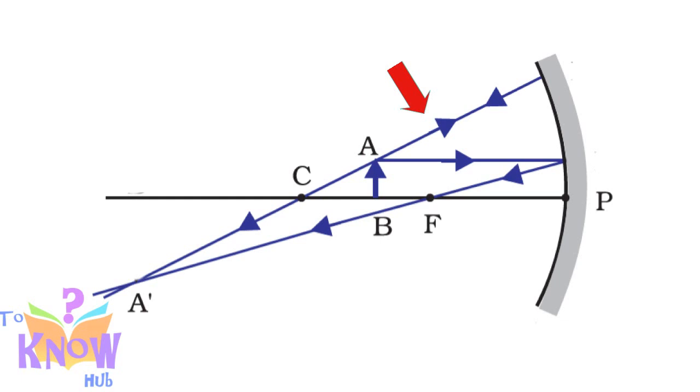So these elements are very important to guess the path of reflected ray. Now we can see that both the rays meet at a point, point A dash. This point is the image of the point A.